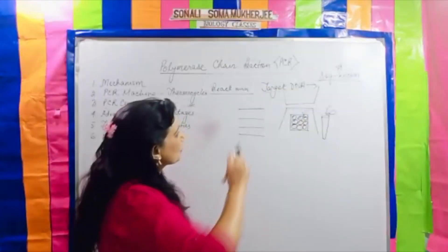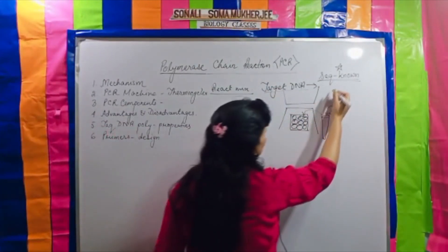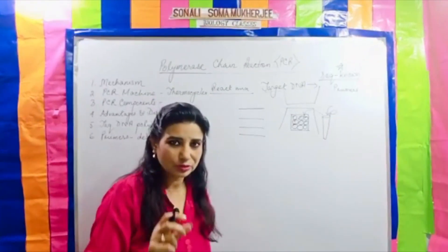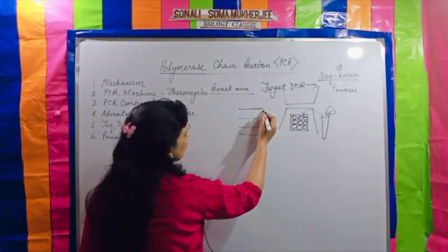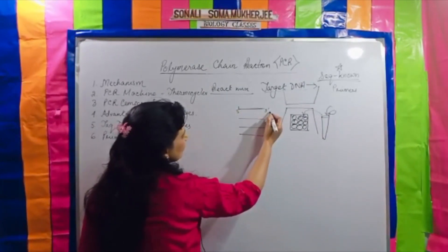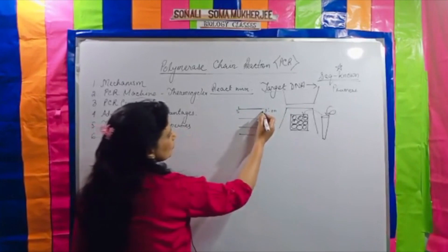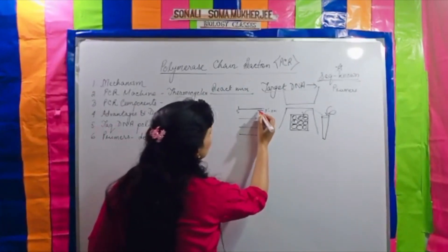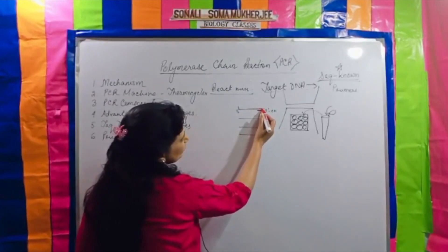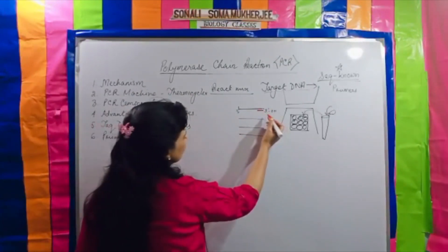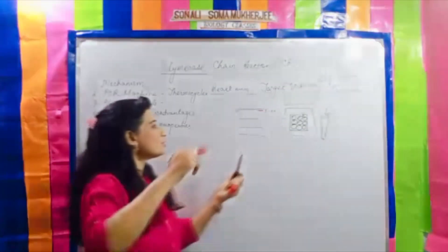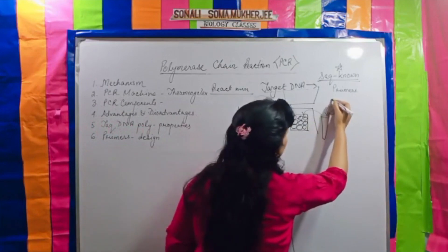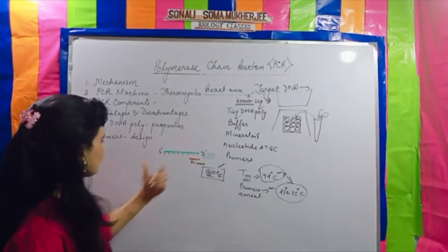Besides the target DNA, the reaction mixture also contains primers — short oligonucleotide sequences used in both forward and reverse directions. If the DNA runs 5' to 3', the primer will free the 3' hydroxyl end and be added there. These short nucleotide sequences are absolutely complementary and matching to the template strand. Then comes the addition of dNTPs.